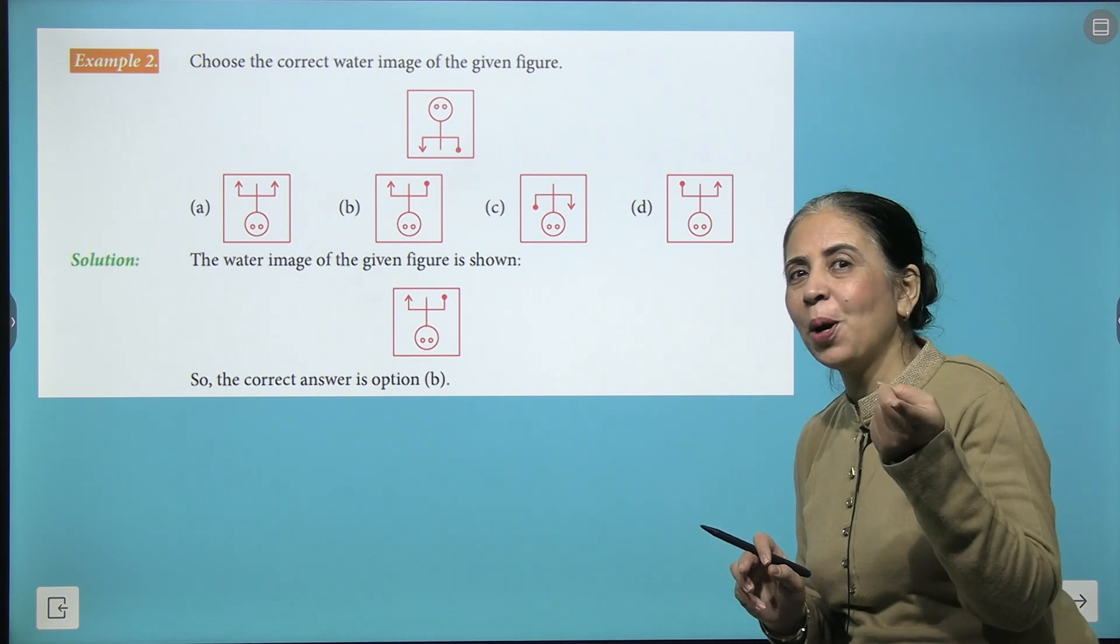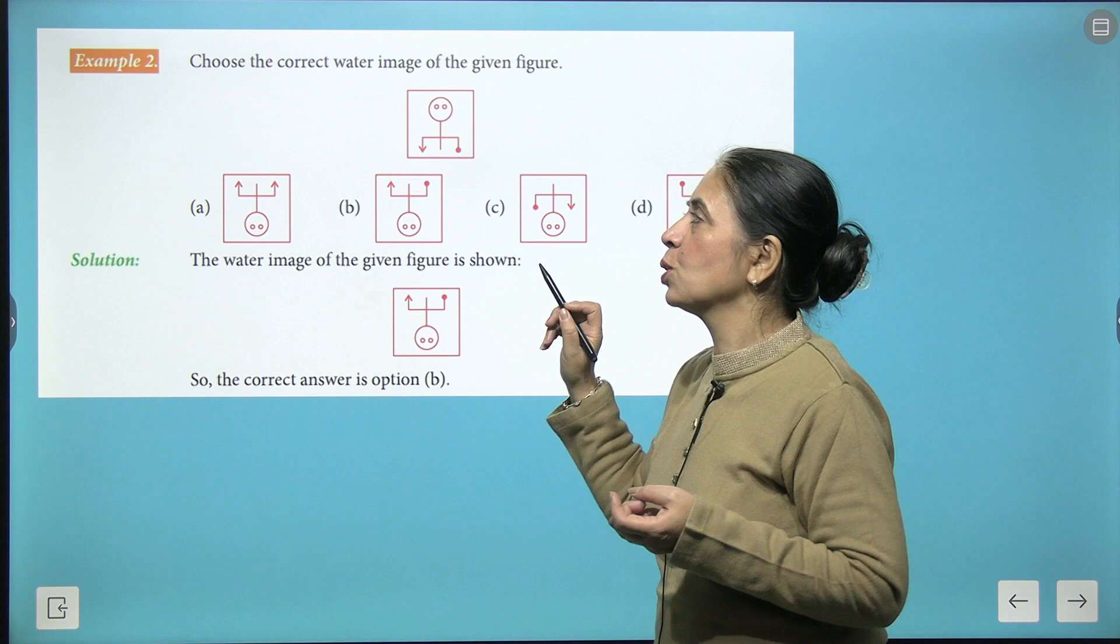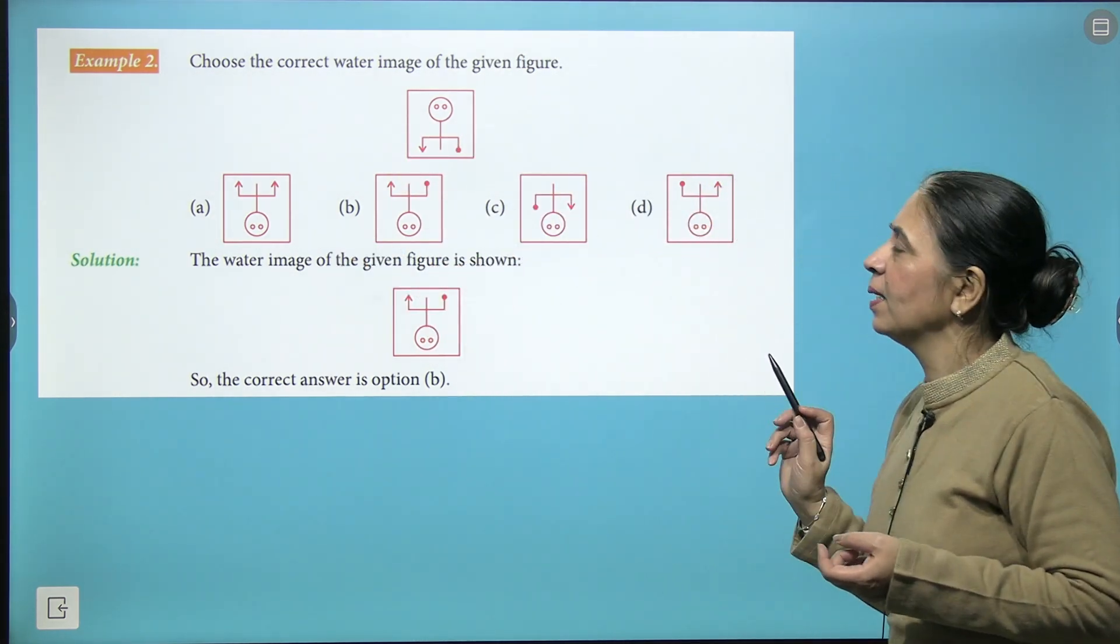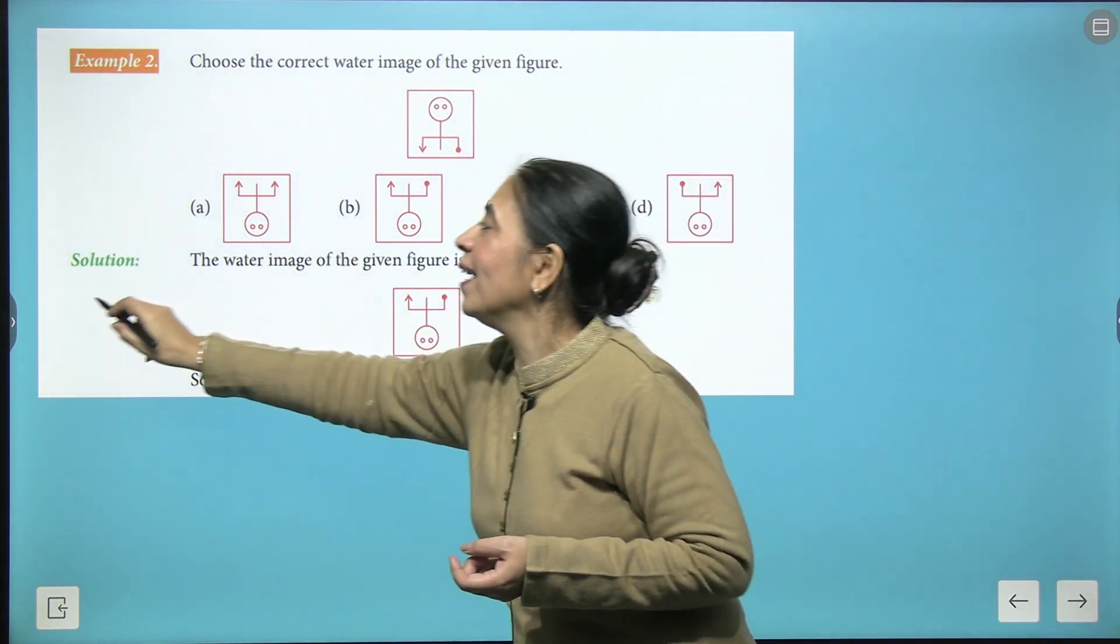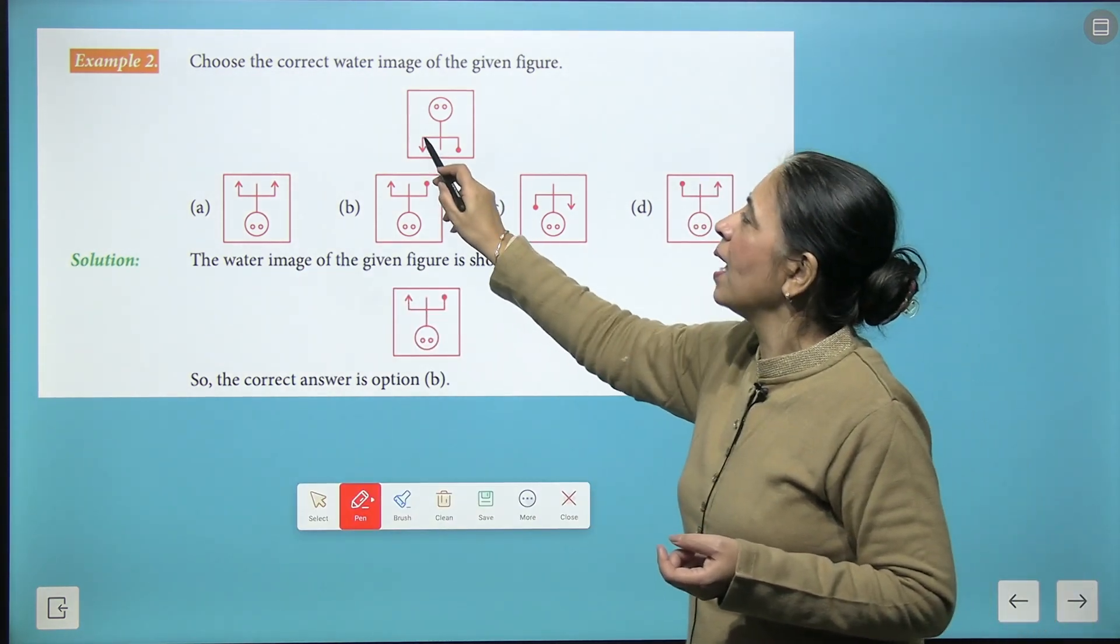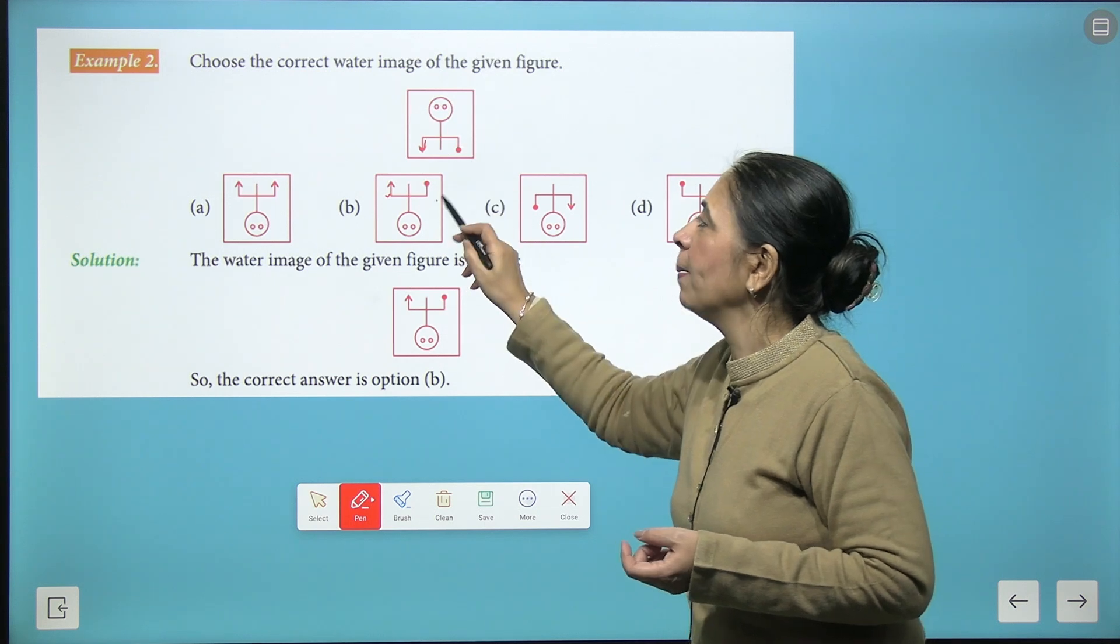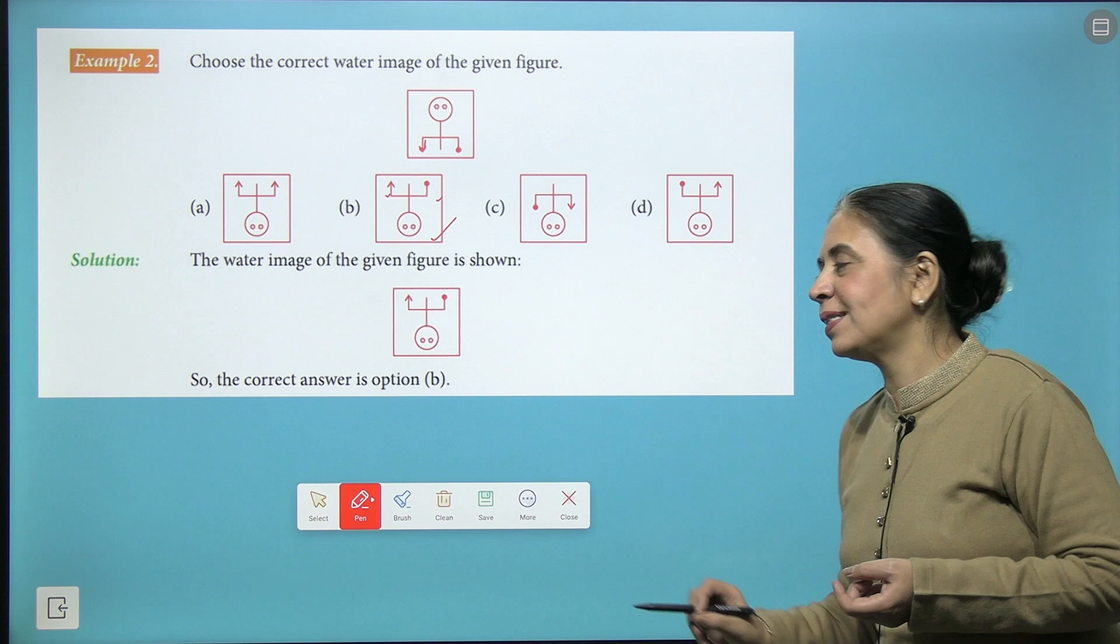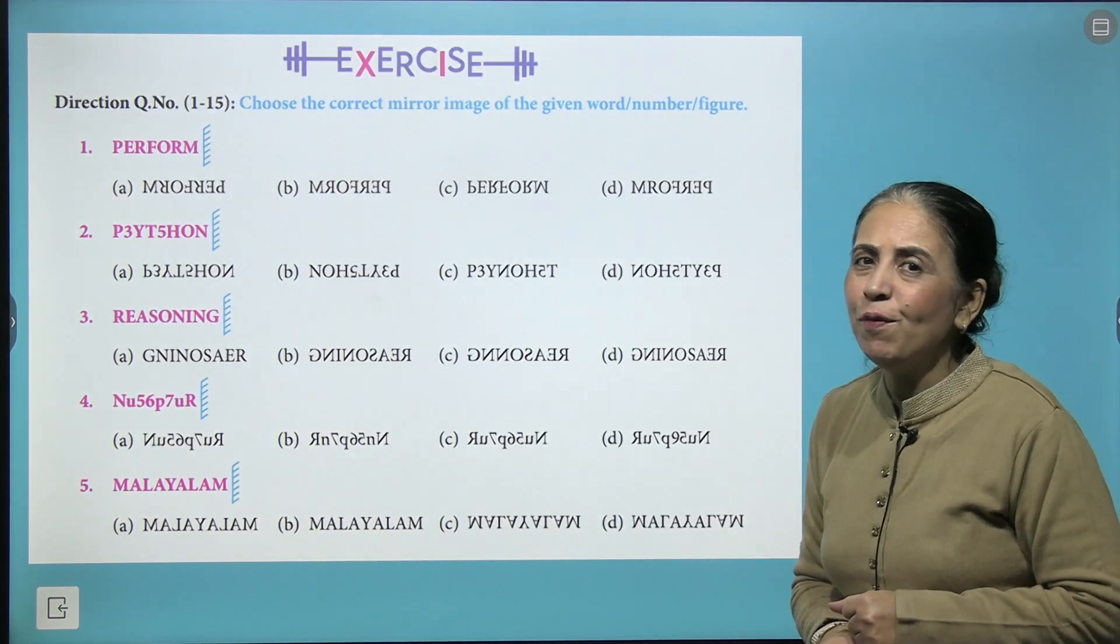Now you have to choose the correct water image out of these images. So quickly look, what is the logic? Beautiful, that's upside down. So let's try looking at this arrow coming at the downward location, this dot comes here. I believe you understood it, this is the correct answer. So it's time to move to the exercise. I believe you are ready and very excited also.